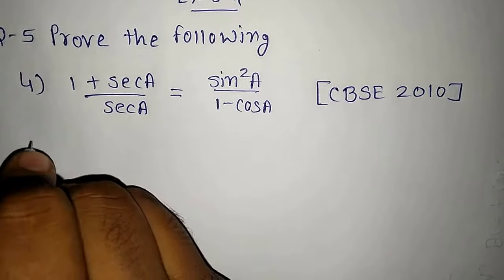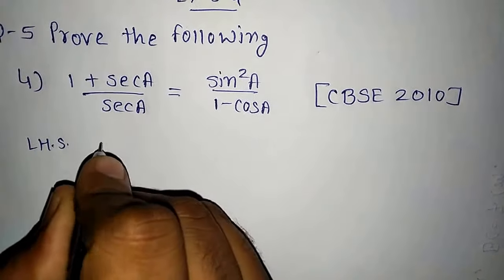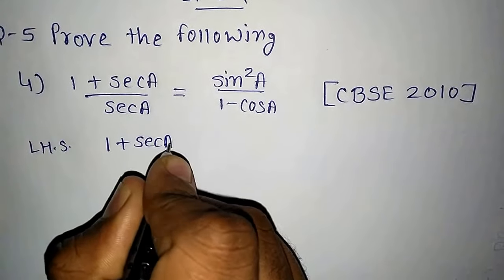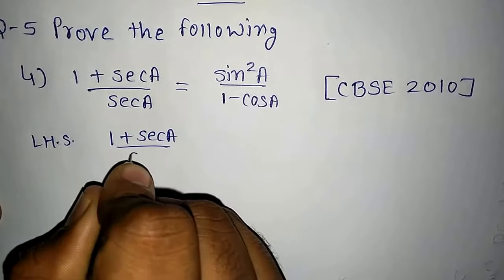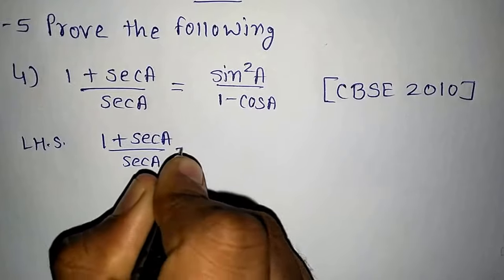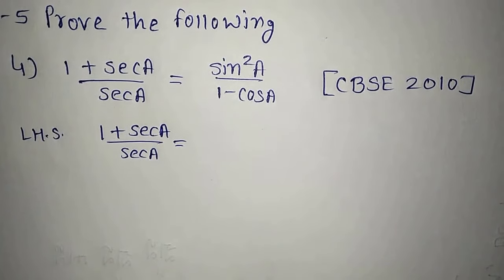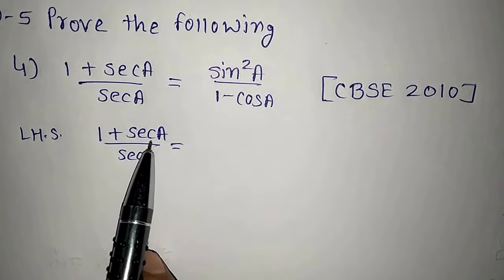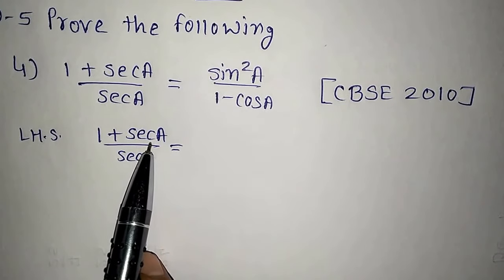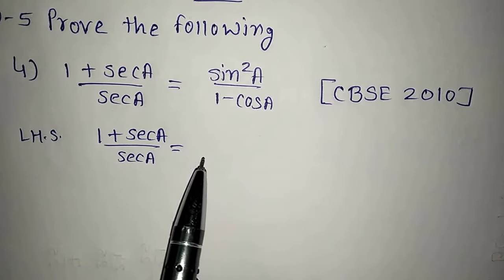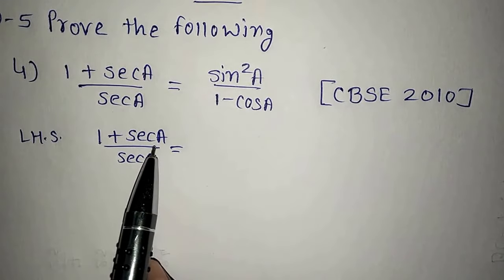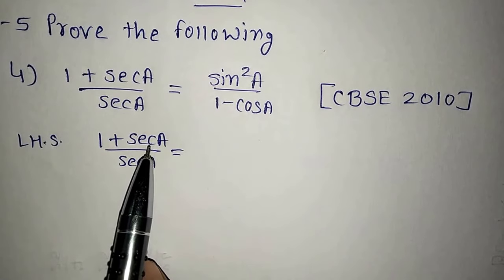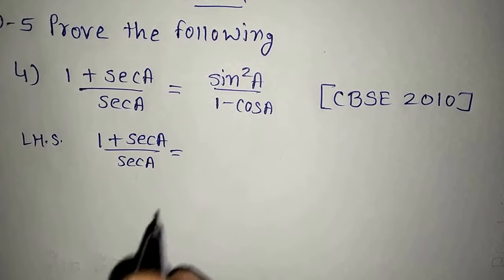Let us begin with the left hand side, which is 1 plus sec A upon sec A. As I have started from here, we need to convert into sin and cos. Sec will be converted into cos. We know that sec is the inverse of cos, so we will convert it into cos.